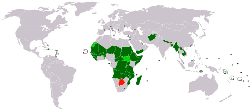A developing country, or a low and middle income country, less developed country, less economically developed country, or underdeveloped country, is a country with a less developed industrial base and a low human development index relative to other countries. However, this definition is not universally agreed upon, and there is also no clear agreement on which countries fit this category. A nation's GDP per capita compared with other nations can also be a reference point.